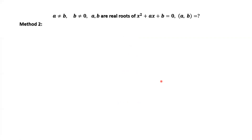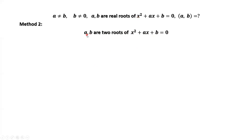Second method. a and b are two roots of x squared plus ax plus b equals zero. We replace x by a and b in this given equation, then we have the following two results.